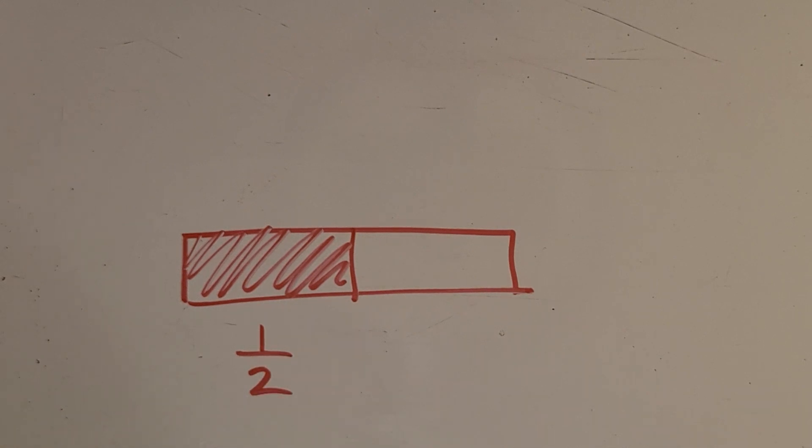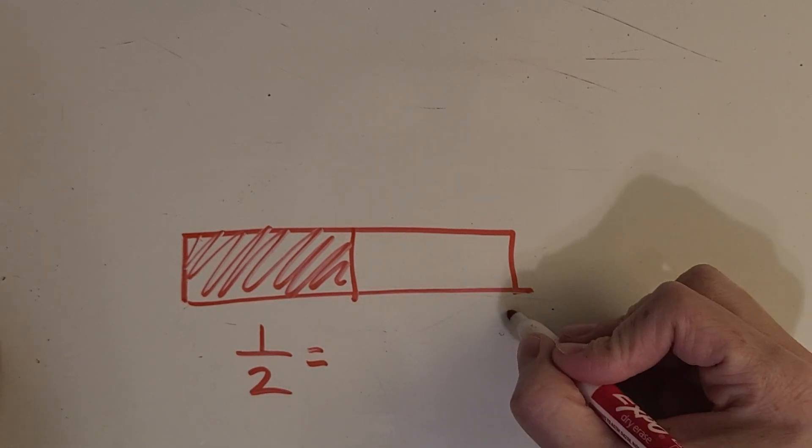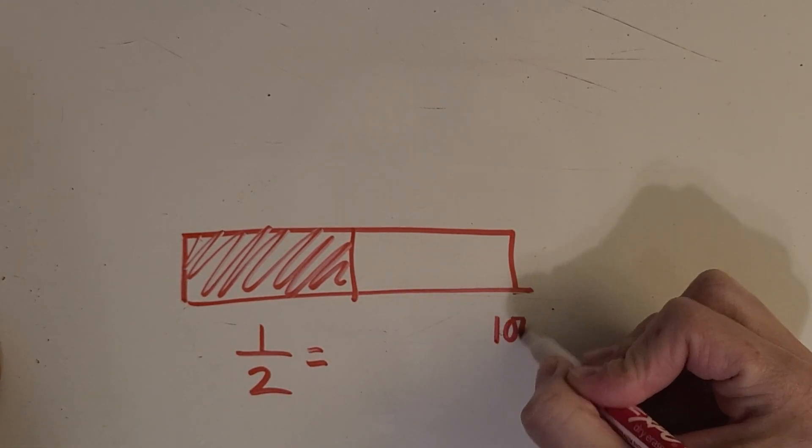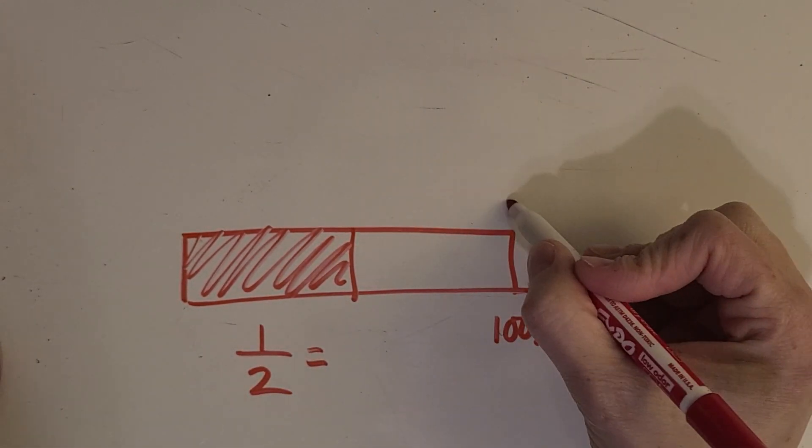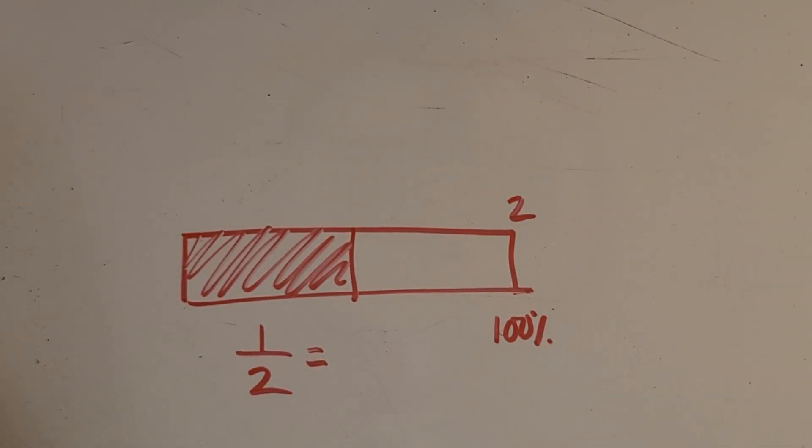So one half is a really good one to know the percentage that it equals. In this one once again we can think about well the whole thing would be 100 percent and we're really just cutting it up into two pieces. So what would be the percentage of one half? You got it, 50. So that equals 50 percent.